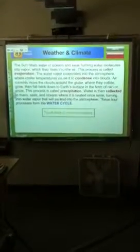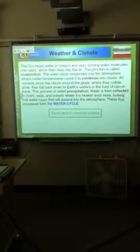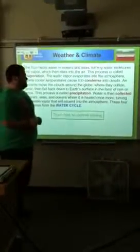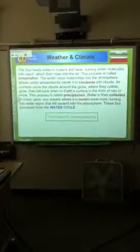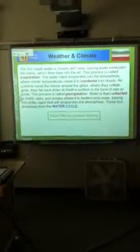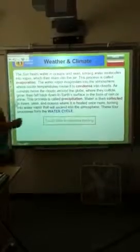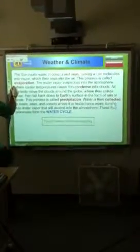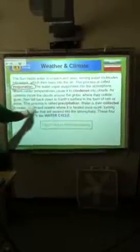It says the sun heats water in oceans and seas, turning water molecules into vapor, which then rises into the air. In the air, the process is called evaporation. The water vapor evaporates into the atmosphere where cooler temperatures cause it to condense into clouds. Air currents move the clouds around the globe where they collide, grow, then fall back down to our surface in the form of rain or snow. This process is called precipitation. Water is then collected in the rivers, seas, and oceans, where it is heated once more, turning into water vapor. So this is the water cycle, Mr. Cosby, like we talked about earlier. Collecting is part of the water cycle? Yep.